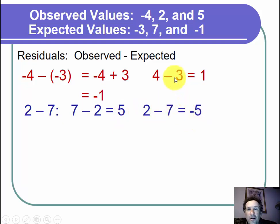Now let's find the third residual. We have a 5 and a negative 1. We take 5 minus negative 1. Just like the first example, minus minus becomes a plus. 5 minus negative 1 is equal to 5 plus 1. 5 plus 1 is just 6.